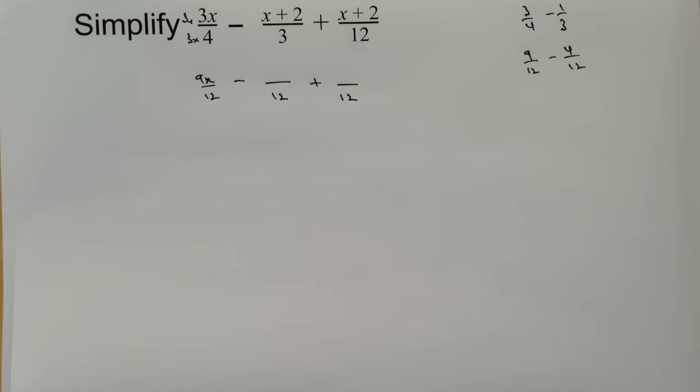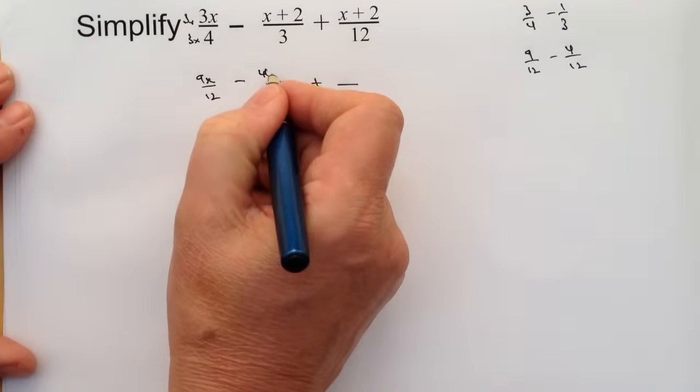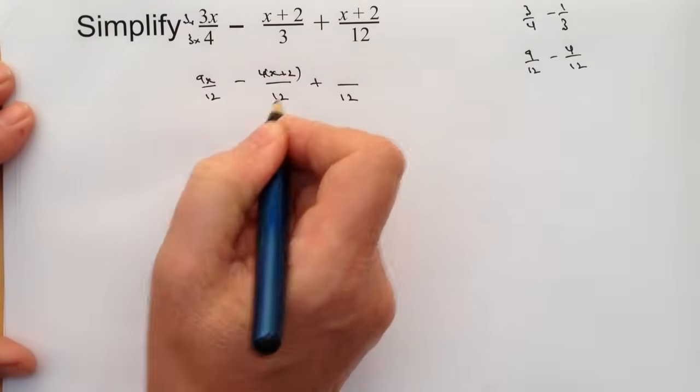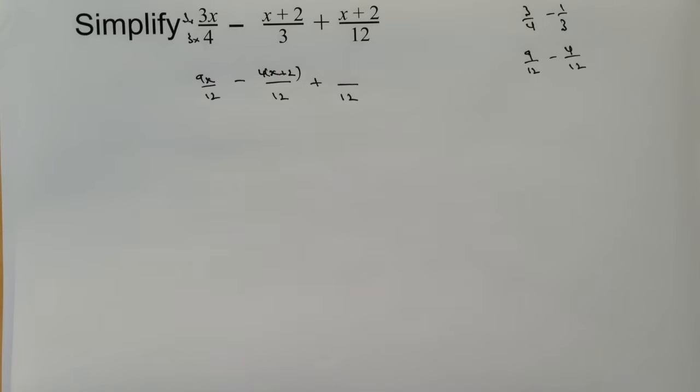Same holds true for the second one, but we've got to be a little bit careful because we've got two separate parts. I'm going to put those into a bracket and write it as 4x plus 2. The final one we can leave as it is because it's already over 12, so that's going to be x plus 2.